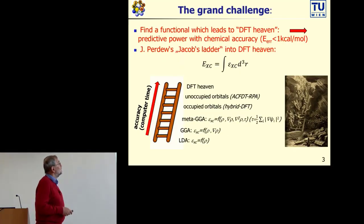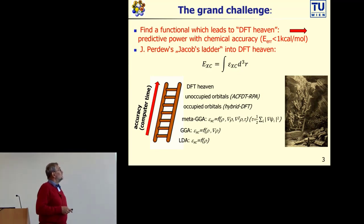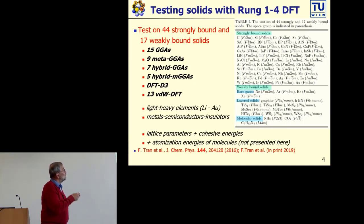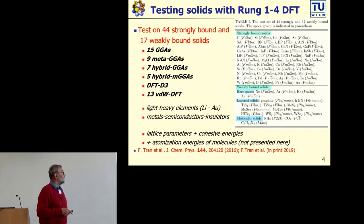Now I will focus here on DFT and the challenge is to find a functional which leads us to this DFT heaven in terms of John Perdew's Jacob's ladder into DFT heaven. So we have benchmarked a wide variety of strongly bound and also weakly bound Van der Waals bound solids using a large variety of GGAs, meta-GGAs, hybrid GGAs and meta-GGAs, and also Van der Waals functionals for a couple of very different systems including light and also very heavy elements, metals, semiconductors and insulators, and also some weakly bound solids, mainly rare gases, layered solids, and some molecular solids.